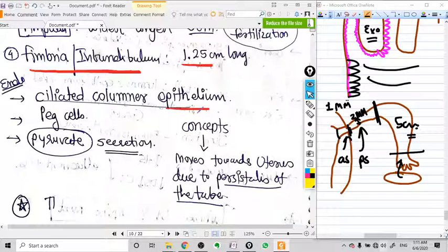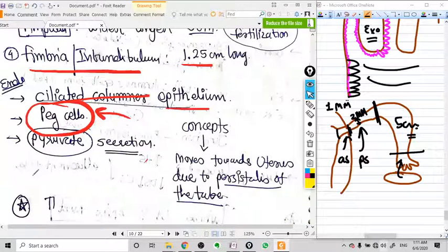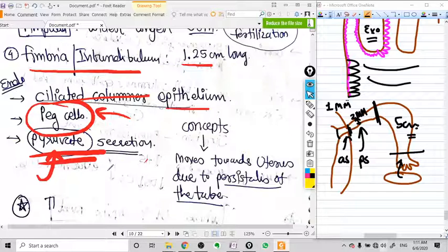What could be the epithelium of fallopian tube? As I have already said, uterus and tubes are made up from the same Mullerian duct, so the epithelium is going to be more or less the same: ciliated columnar epithelium. In this epithelium we have peg cells.